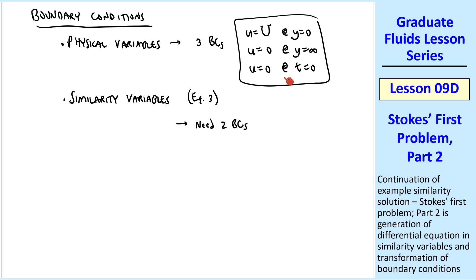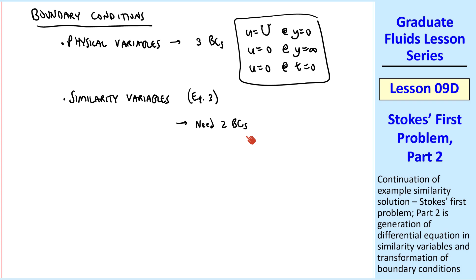Now we have to transform these boundary conditions into our similarity variables. And if everything works out, two of them will merge into one, so that three boundary conditions become two boundary conditions. If this doesn't work, our similarity solution has failed. So let's check this out.